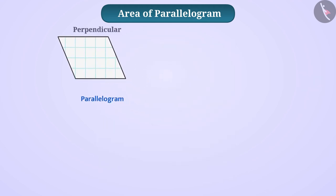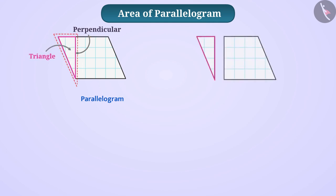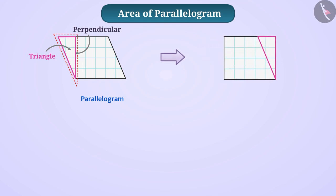Draw the perpendicular from one of the vertices of this parallelogram on its opposite side. You will get this type of triangle. Cut and separate this triangle from the parallelogram, then keep this triangle on the other side of the parallelogram as shown.